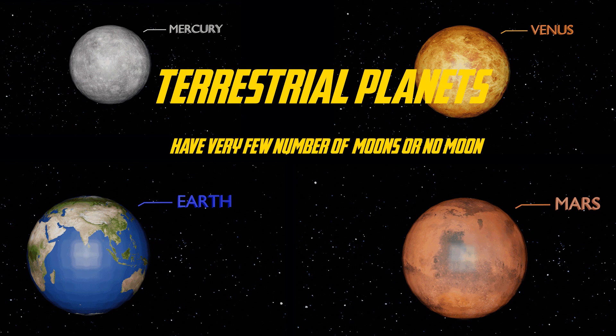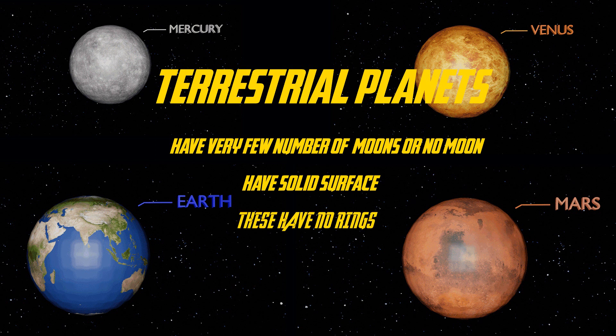Terrestrial planets have very few moons or no moon. They have a solid surface, they have no rings, and they are small in size.